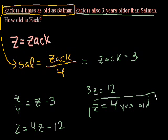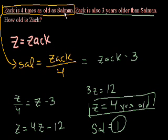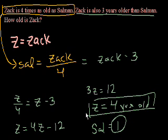Let's see if that makes sense. If Zach is 4 years old, the first sentence says Zach is 4 times as old as Salman, so that means Sal is 1 year old. And it also says Zach is 3 years older than Salman — well, that's consistent. 4 is 3 more than 1. So we were right: Zach is exactly 4 years old.